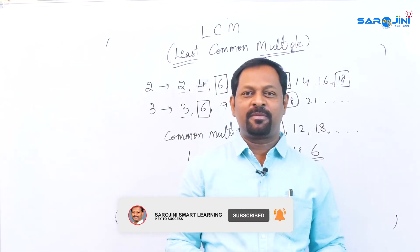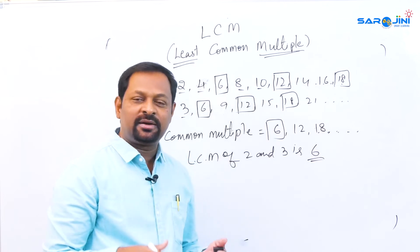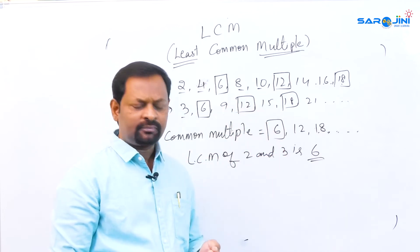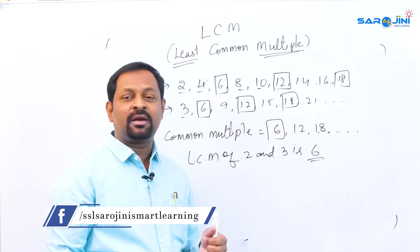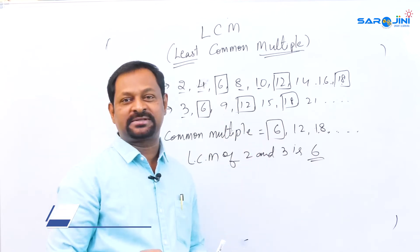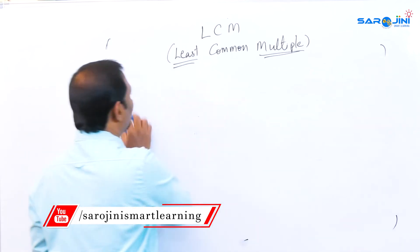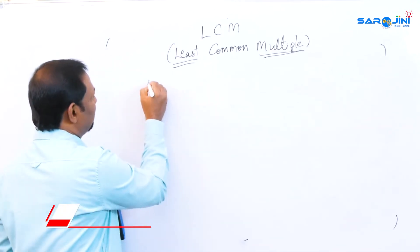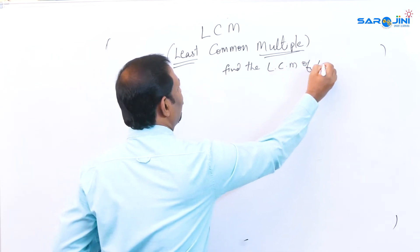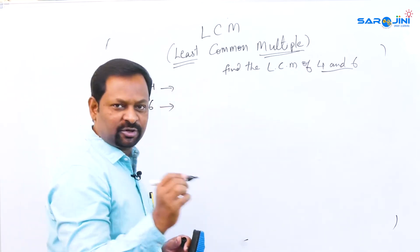There is another method called the factorization method, which I will explain shortly. This listing method is especially useful for smaller numbers. Suppose I take the numbers 4 and 6 and ask you to find the LCM of 4 and 6 — we first need to find the multiples of each.